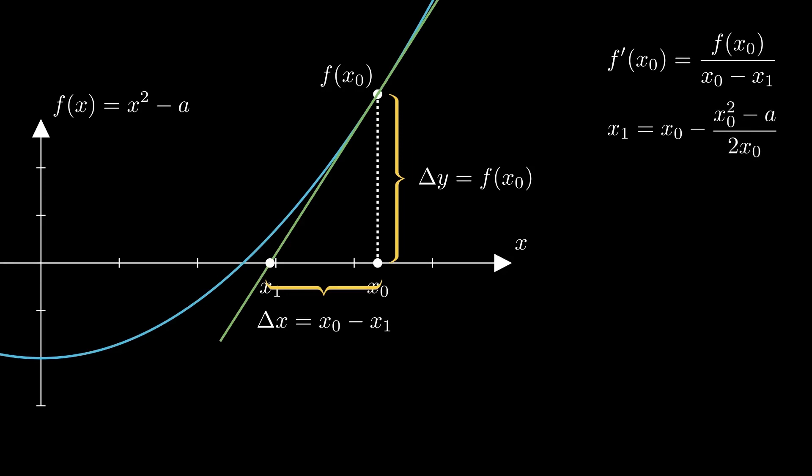After further simplification, we obtain our new guess value x1. Likewise, if we repeat the process with a tangent at x1, our next value becomes this.